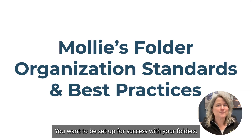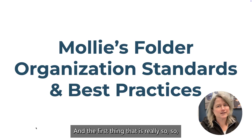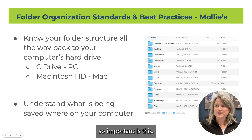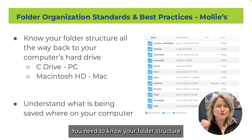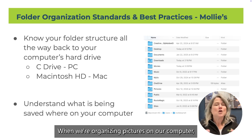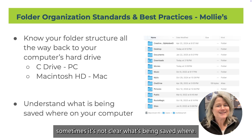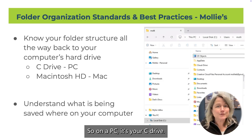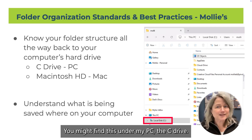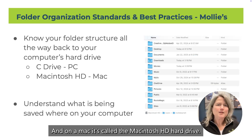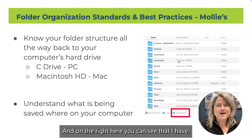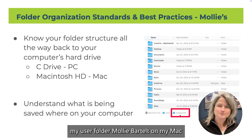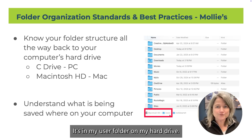You want to be set up for success with your folders. The first thing that is really so important is this: you need to know your folder structure all the way back to your computer's hard drive. When organizing pictures on our computer, sometimes it's not clear what's being saved where. On a PC, it's your C drive - you might find this under My PC. On a Mac, it's called the Macintosh HD hard drive. You can see my user folder, Molly Bartelt, on my Mac - it's in my user folder on my hard drive.